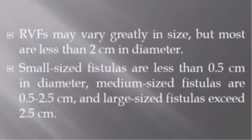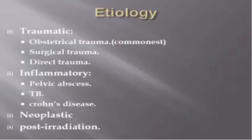Rectovaginal fistulas may vary greatly in size, but most are less than 2 cm in diameter. Small fistulas are less than 0.5 cm, medium-sized fistulas are between 0.5 and 2.5 cm, and large fistulas are more than 2.5 cm.